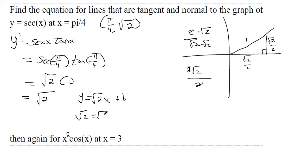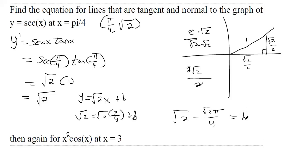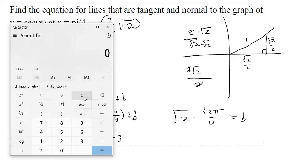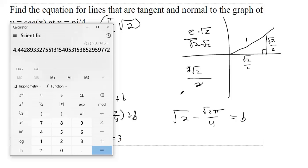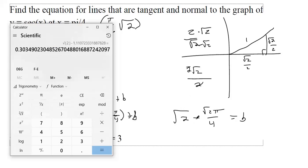Plug in √2 for y and π/4 for x. We need to get b by itself, so subtract √2·(π/4) from both sides. That gives b = √2 − √2·(π/4). I looked at the book and it uses decimal approximations, so we can do that too. √2 times π divided by 4 gives the second term, and subtracting that from √2 gives a decimal approximation for b.